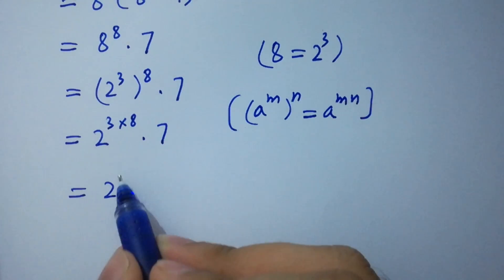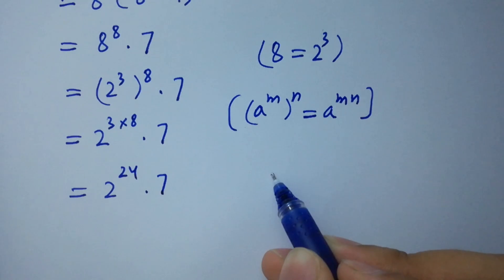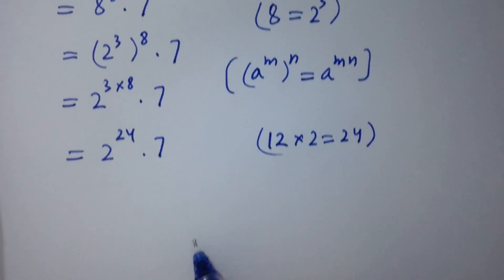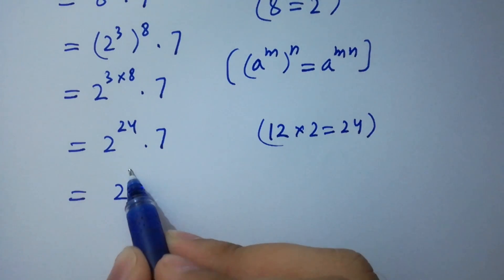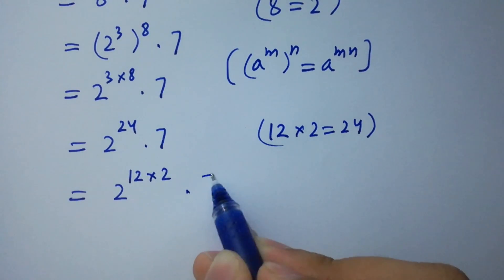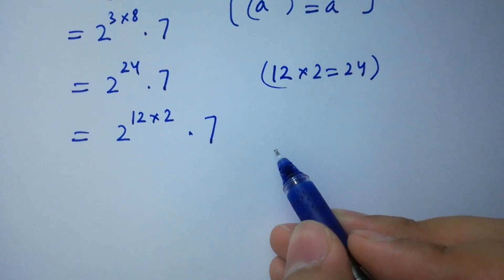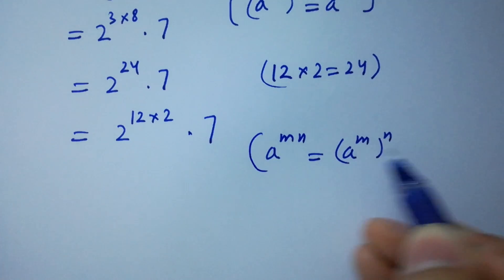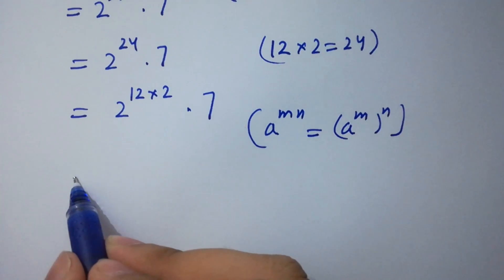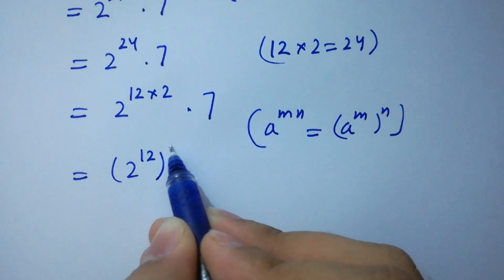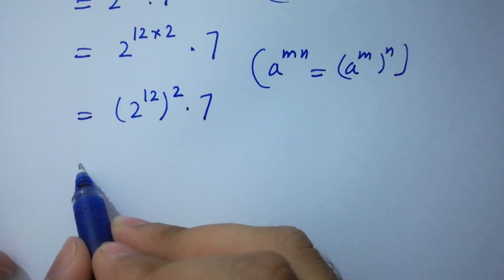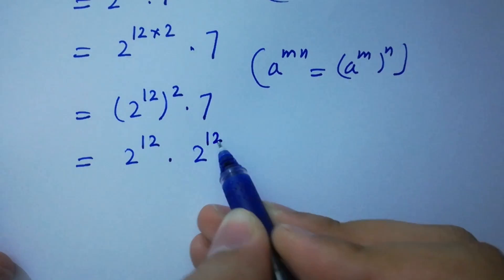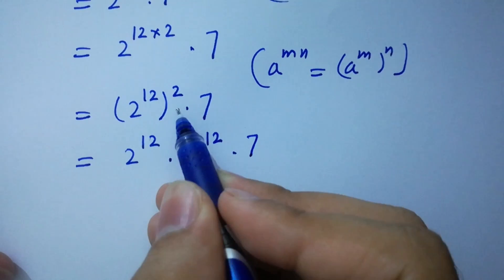2 to the power 3 times 8 is 24, times 7. This can be rewritten as 2 to the power 12 times 2 to the power 12 times 7, because 12 plus 12 equals 24.